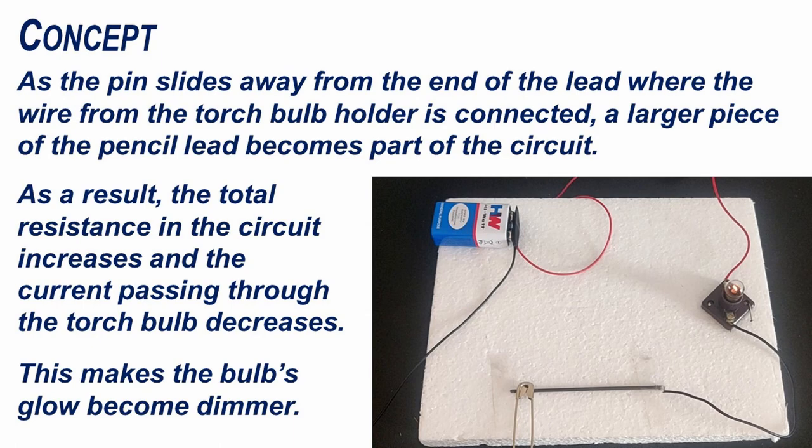As a result, the total resistance in the circuit increases and the current passing through the torch bulb decreases. This makes the bulb's glow become dimmer.